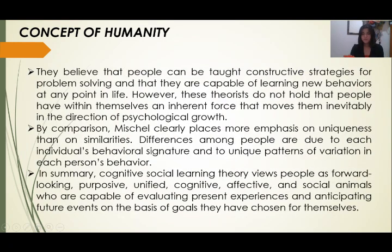In summary, Cognitive Social Learning Theory views people as forward-looking, purposive, unified, cognitive, affective, and social animals who are capable of evaluating present experiences and anticipating future events on the basis of goals they have chosen for themselves.